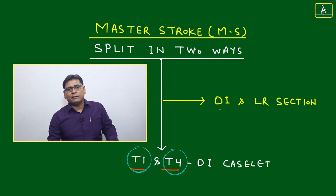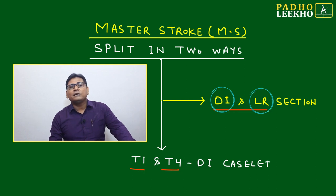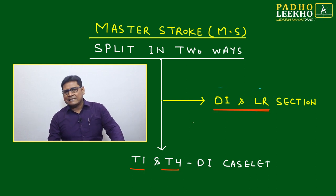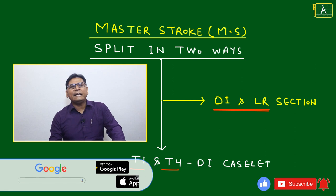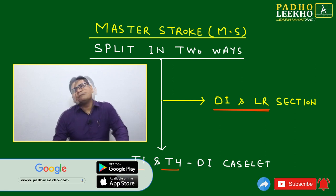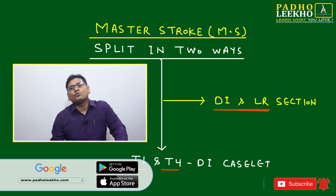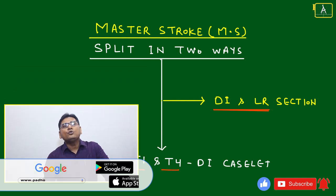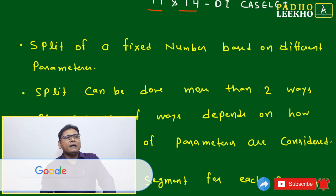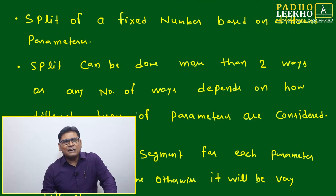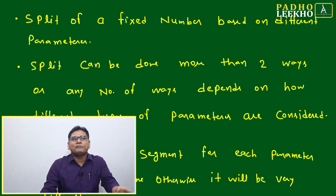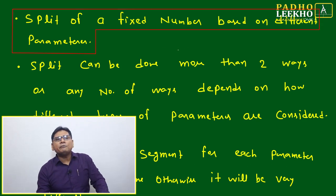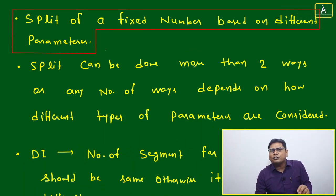This is going to affect your DI and LR section — no doubt — because we are discussing DI only. I am going to discuss how to split a fixed number in two different ways, then try to understand what the purpose is and how a DI case let can be framed. A split of a fixed number is based on different parameters.